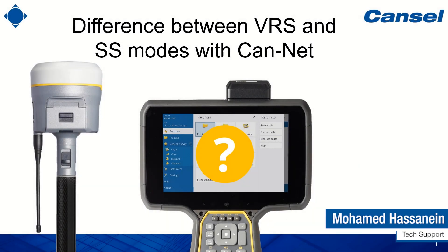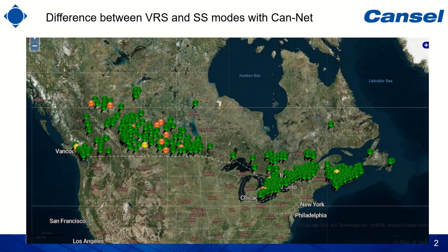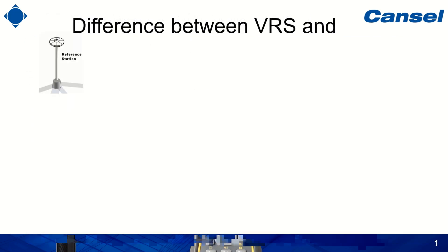Welcome to a new two-minute video from CANNET. In this video we will discuss the difference between VRS and SS modes with CANNET. CANNET is a network of hundreds of GPS-based stations which are connected through the internet, and users can use them to create their own base station for RTK, or real-time kinematic, data collection mode.